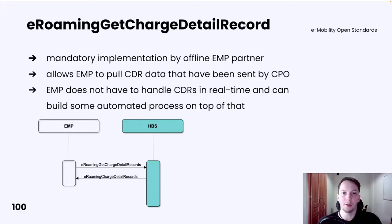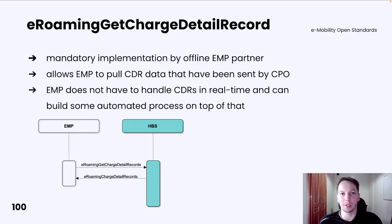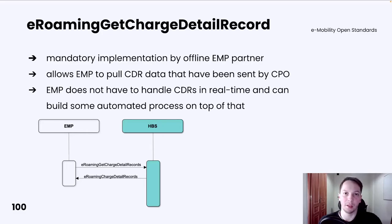But what happens when you would like to be an offline EMP, or when Hubject tries to communicate with your EMP system but it fails and you cannot receive a CDR? In this case, the E-Roaming Get Charge Detail Record operation might be useful. It allows EMP to pull CDR data that was sent by CPO to the Hubject platform. EMP does not have to handle CDRs in real-time; instead, you can build an automated process on top of that operation. It's worth mentioning that EMP can pull CDRs in case real-time processing was not possible, for example, due to technical errors.